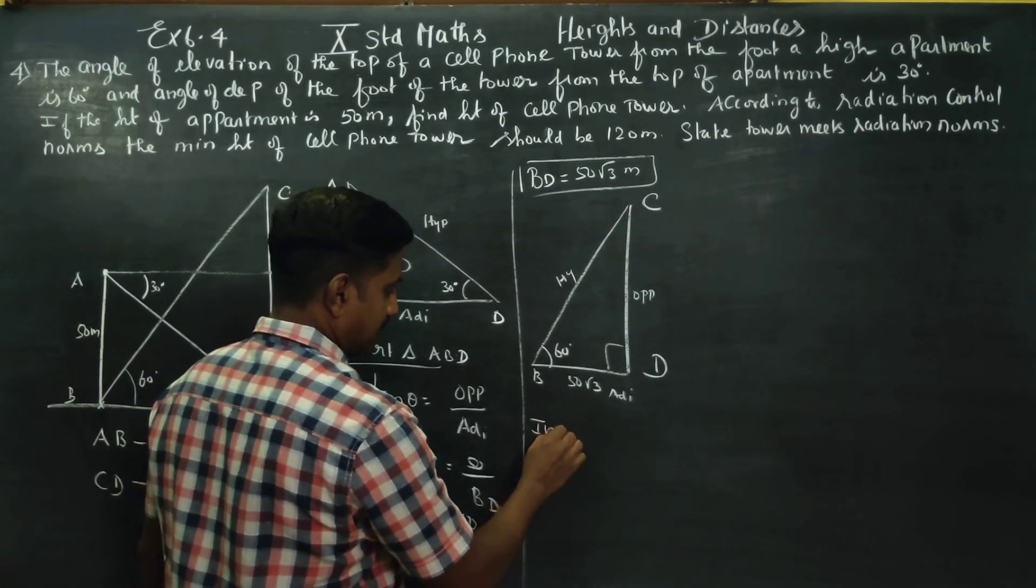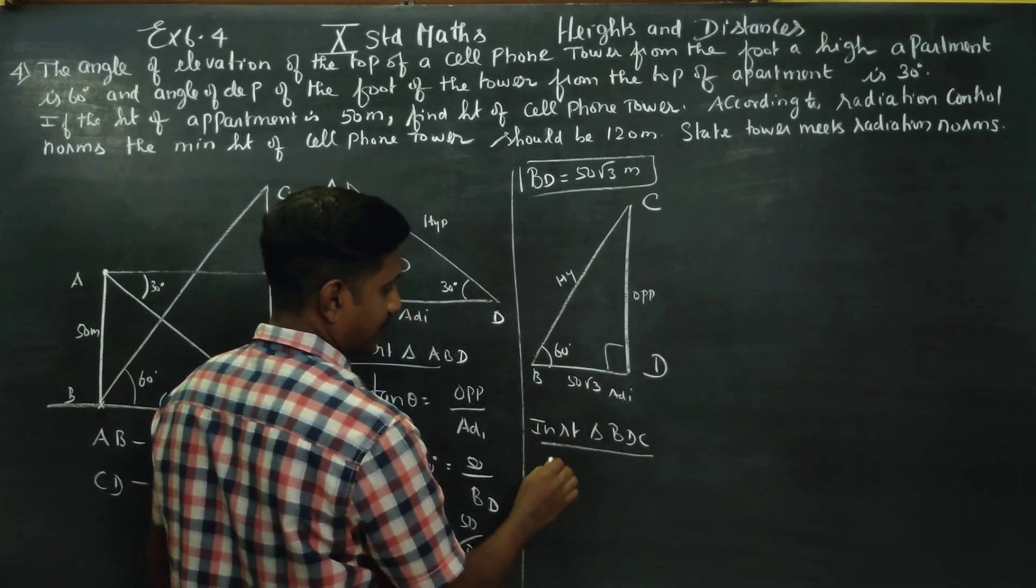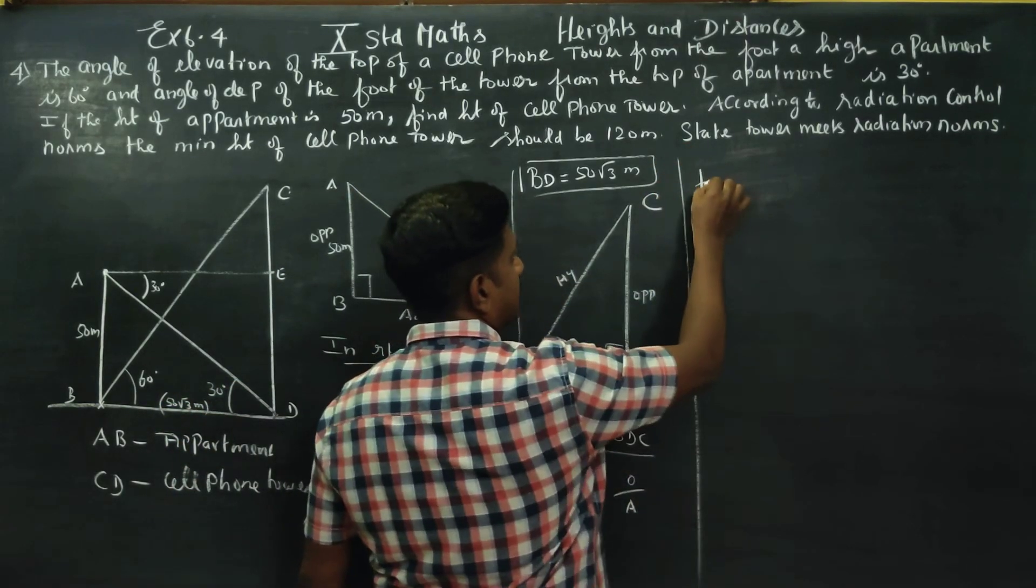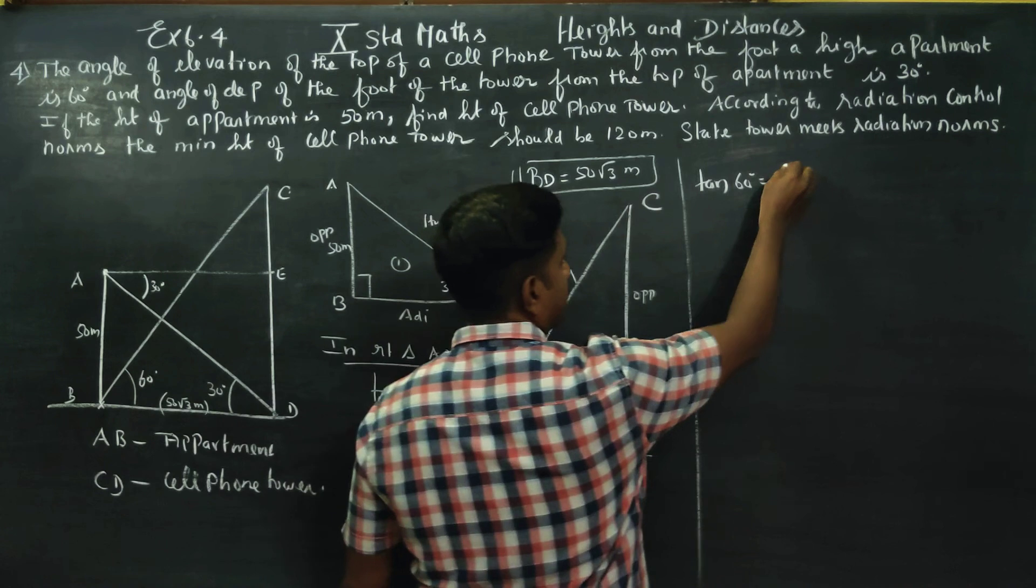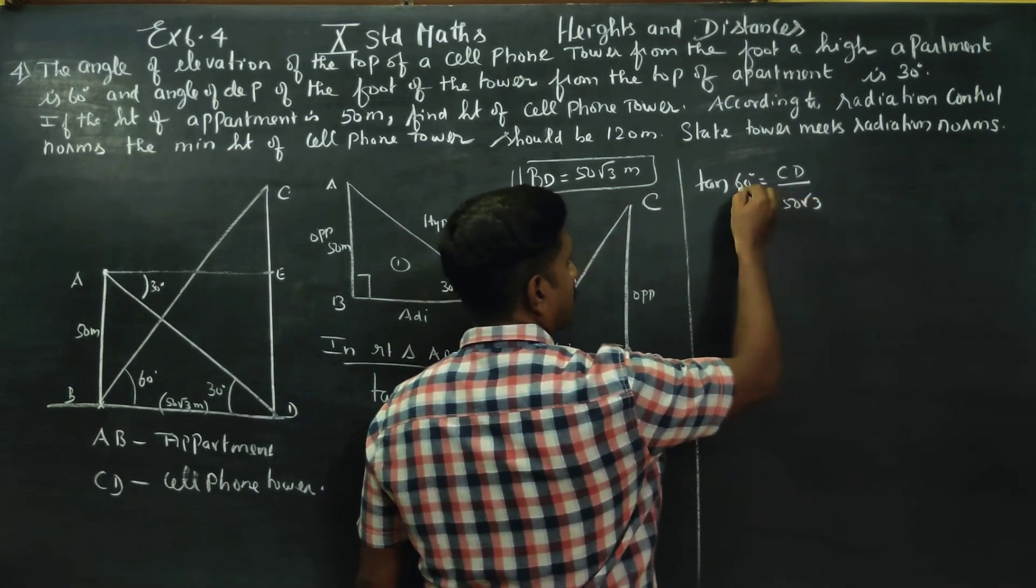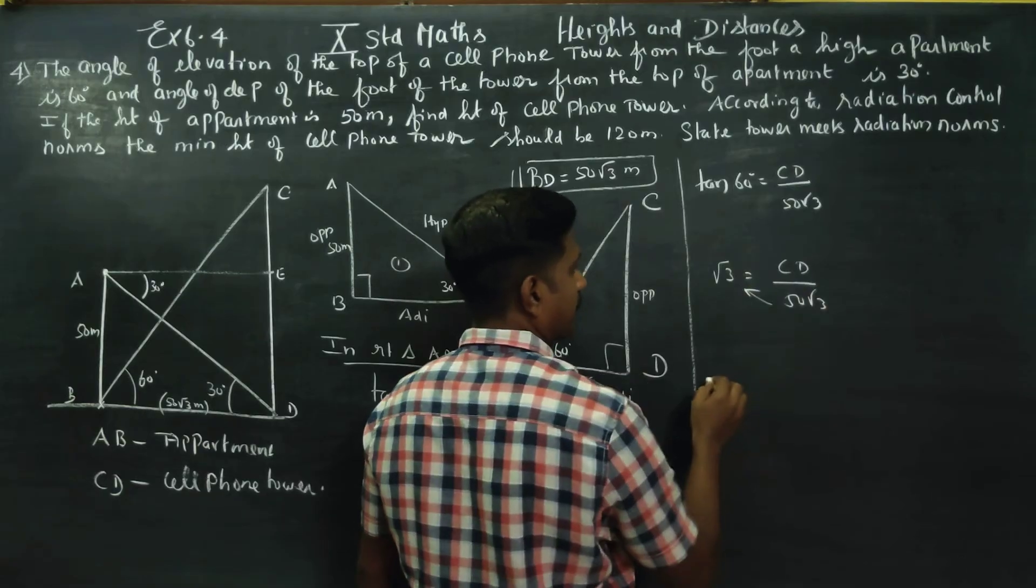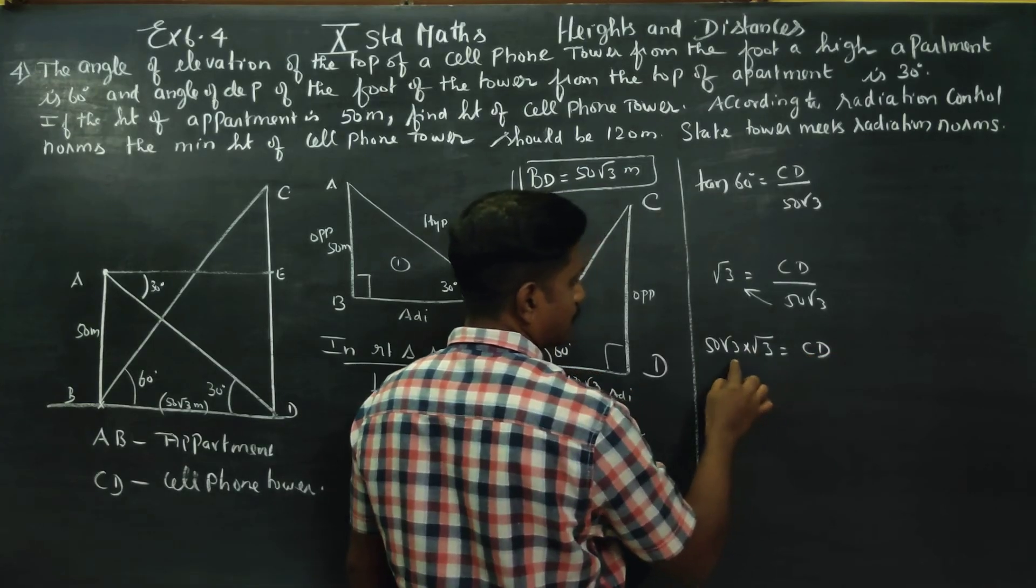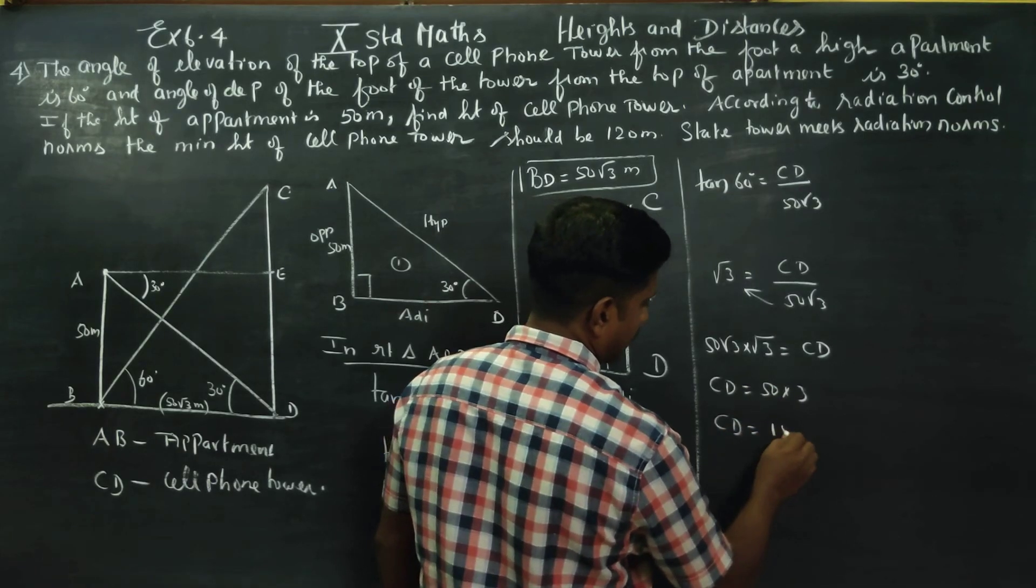In right triangle BDC, tan theta equals opposite by adjacent. Tan theta is 60 degrees. Opposite is CD, adjacent is 50 root 3. Tan 60 is root 3. Root 3 equals CD by 50 root 3. Cross multiply, 50 root 3 into root 3. Root 3 root 3 is 3. CD equals 50 into 3. CD equals 150 meters.